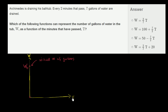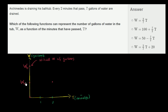Every two minutes that pass, time is given in minutes and W is in gallons. So every two minutes that pass, seven gallons of water are drained. Let's say two minutes pass from time equals zero — so this is one minute and this is two minutes. After two minutes, we're going to get to W naught minus seven — however much water we had before, we'll have seven gallons less. So if we plot the number of gallons as a function of time, it would look like a downward sloping line.